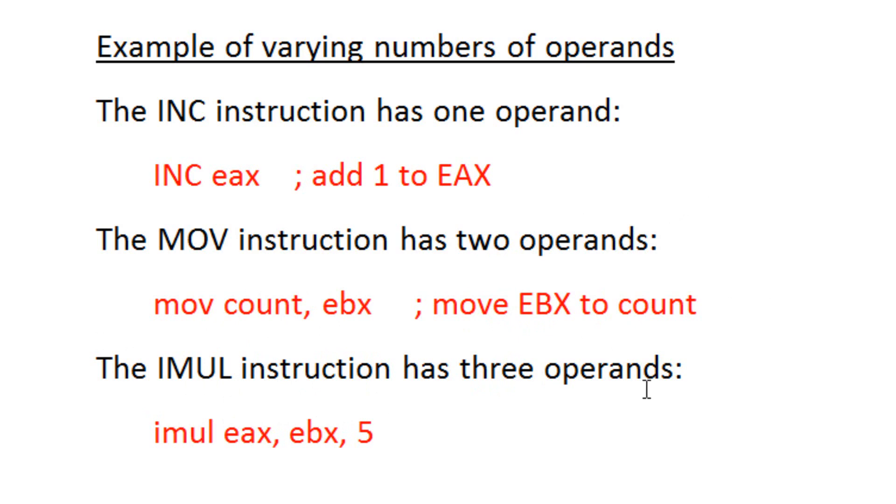Now, the IMUL instruction has 3 operands. IMUL here, EAX, EBX, 5. What this is doing, it's multiplying the value of EBX with 5 and then storing the value into register EAX.